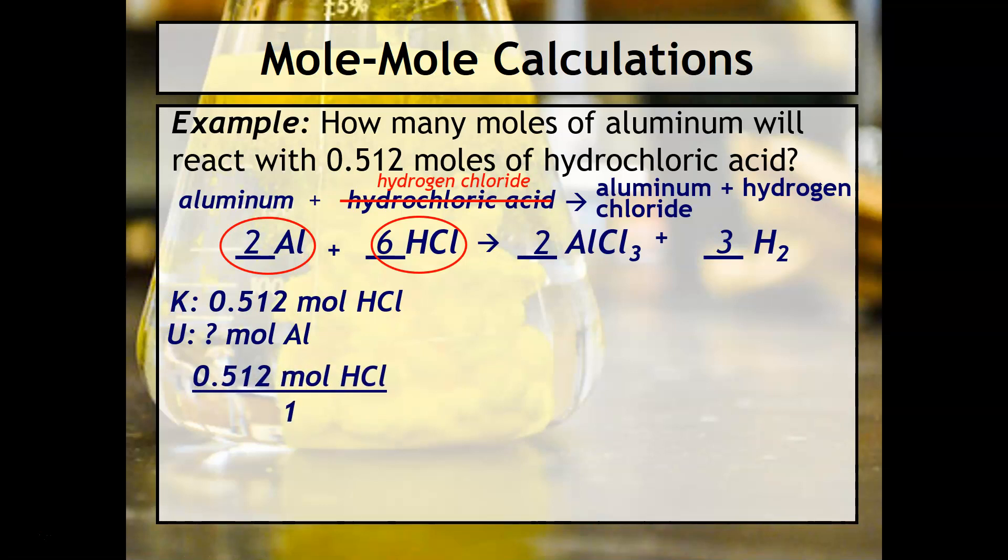We'll take our known and put it over one. Then our conversion factor is now going to relate the moles of aluminum to the moles of hydrochloric acid. The only way to do this is to say for every 6 mol HCl that reacts, 2 mol Al are required. And so that is why that is going to be your ratio.